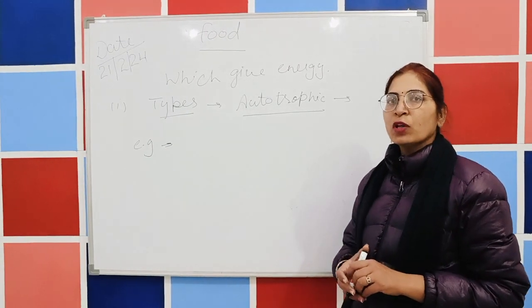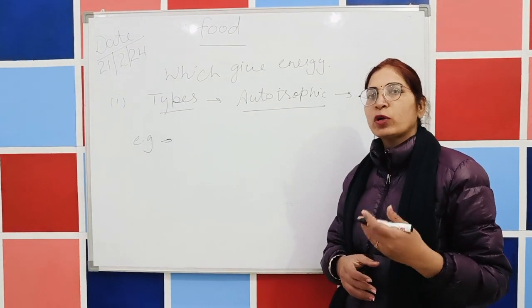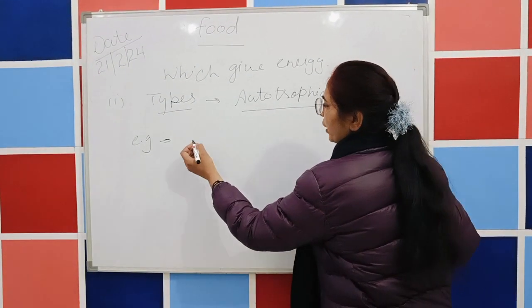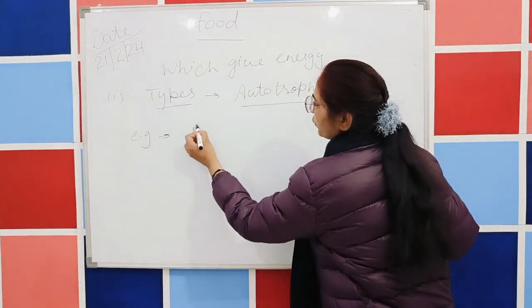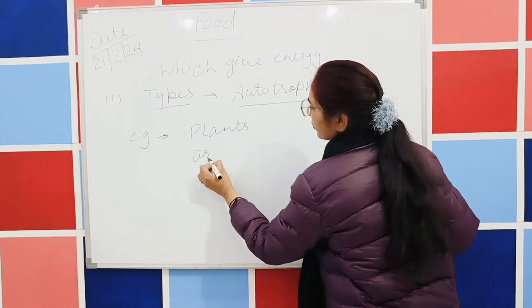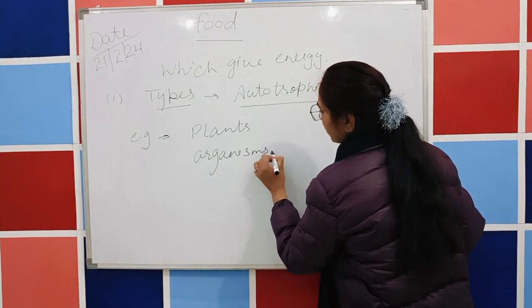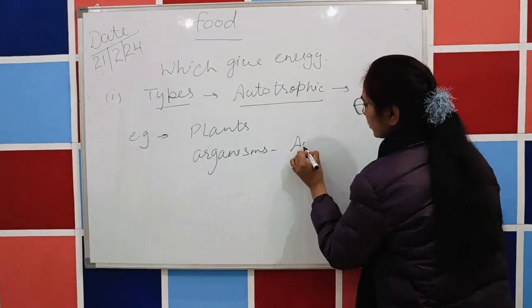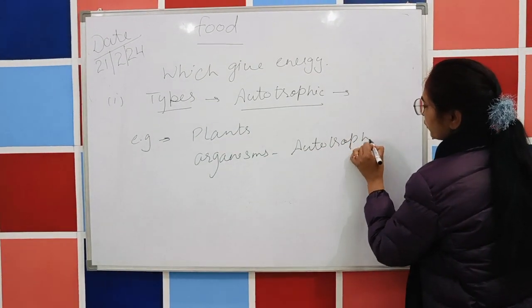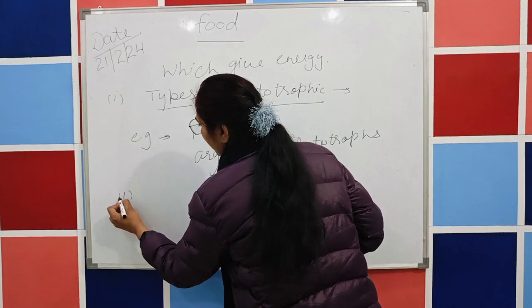The organisms — when plants prepare their food — they are called autotrophs. The second type is heterotrophic nutrition.